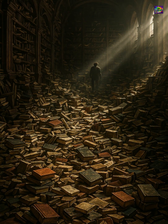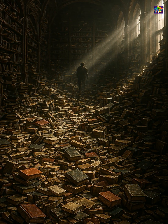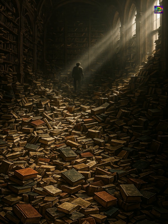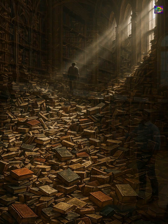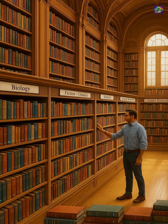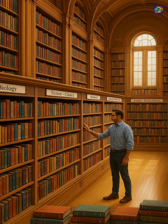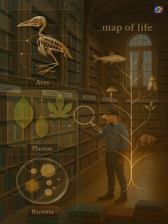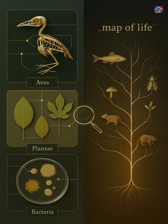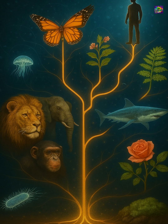Imagine entering a huge library, but every book is scattered randomly. You'd never find what you're looking for. But if the books are arranged by subject, author, or genre, suddenly everything makes sense. In the same way, classification helps biologists understand life, predict traits, and even discover new species by looking at patterns.